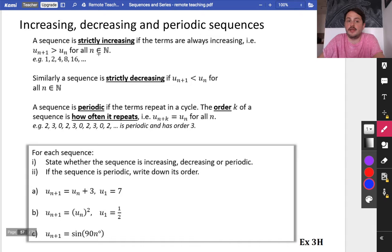This is pretty obvious about what a sequence might be. So a sequence is strictly increasing if the terms are always increasing. So if the next term in the sequence is bigger than the previous term in the sequence, for all values of n, n being a natural number, just all of the integers.